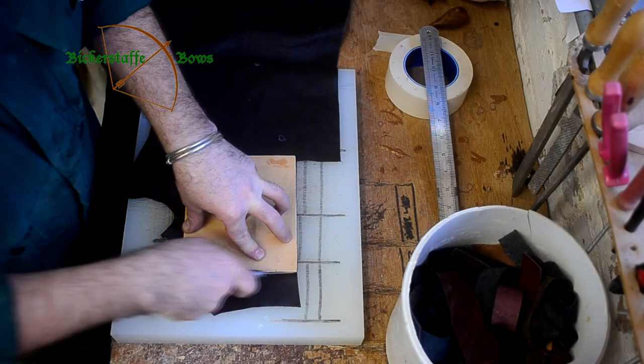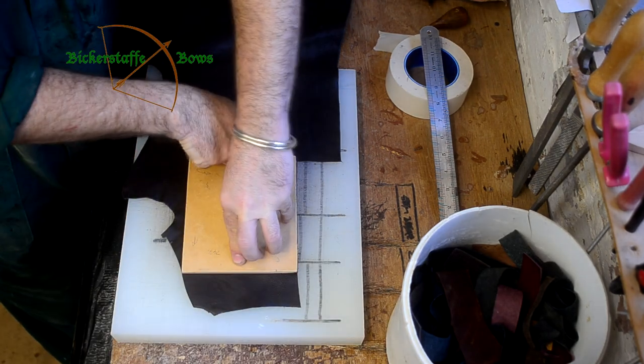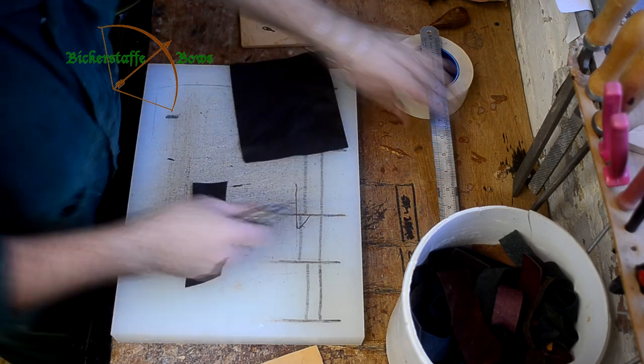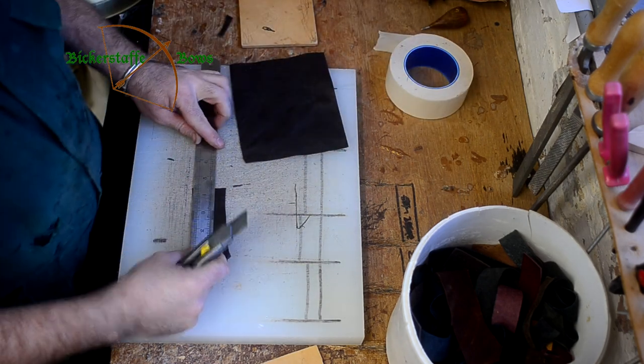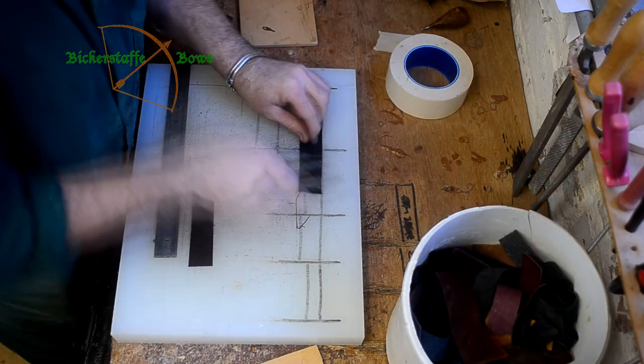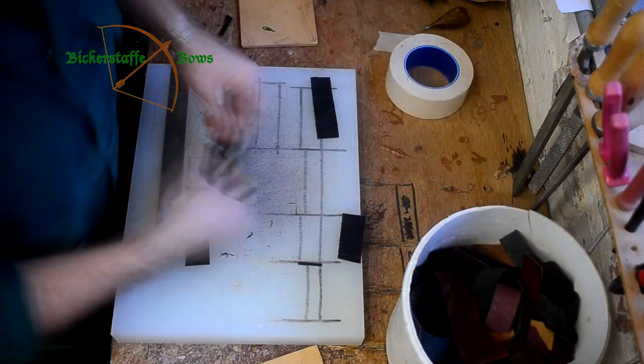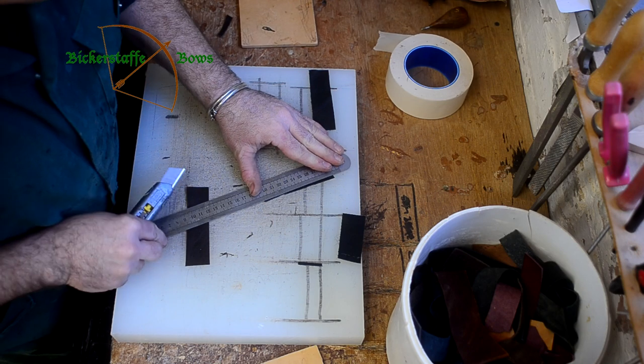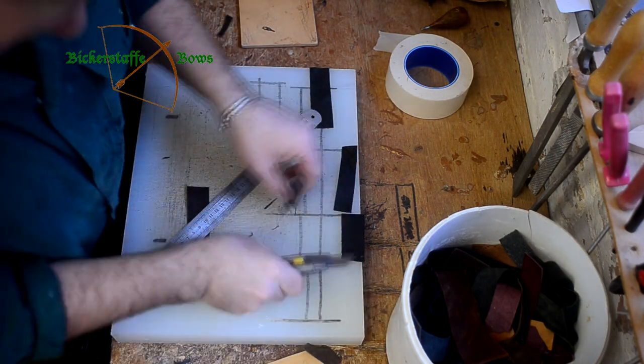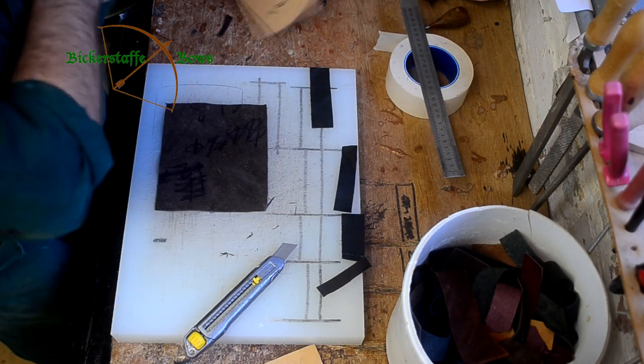The next job is to cut and fit a leather grip. All of our grips nowadays are hand stitched onto the bow. On the back of the bow we make a series of little pads of leather which gives the grip a much more comfortable feel in the hand when you're shooting the bow.